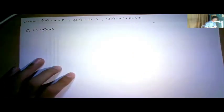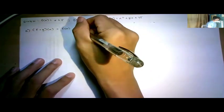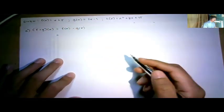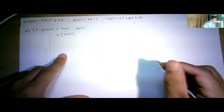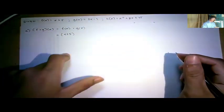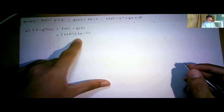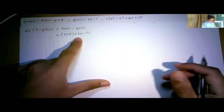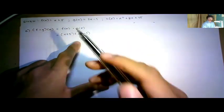Example E: (f·g)(x) = f(x) times g(x). Substituting: f(x) = x + 5, multiplied by g(x) = 2x - 1. So we have (x + 5)(2x - 1). In algebra, two parentheses next to each other means multiplication. We distribute positive x to (2x - 1), and then positive 5 to (2x - 1).